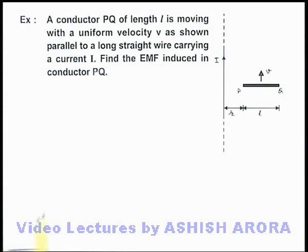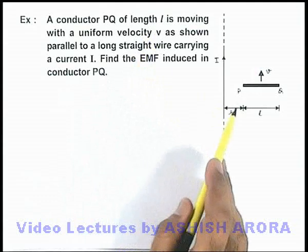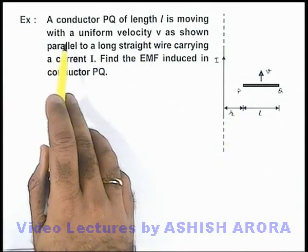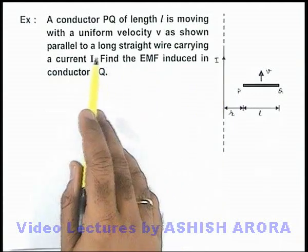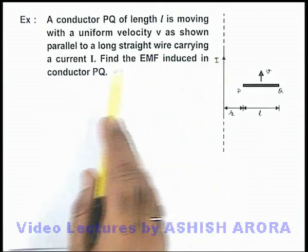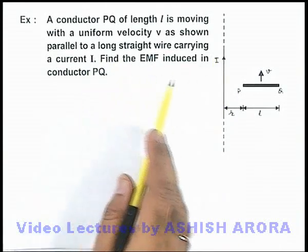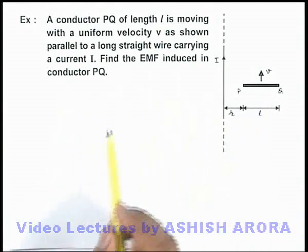In this example we are given that a conductor PQ of length l is moving with uniform velocity v as shown, parallel to a long straight wire carrying a current I, and we are required to find the induced EMF in the conductor PQ.